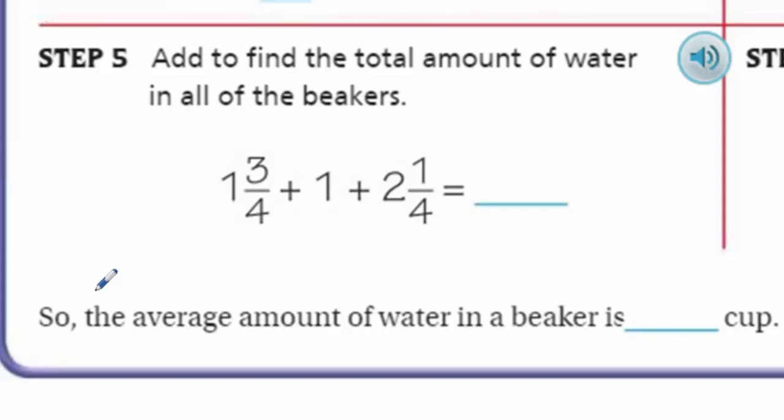Step five: add to find the total amount of water in all of the beakers. Maybe it's because I need to find the sum of all the amounts of water in the beakers. Before I can divide the total by the number of beakers, we need to add them all together first. One and three quarters plus one plus two and one quarter. These two numbers, they're compatible. These two numbers, when they come together, they make whole things happen. It makes a whole number. That's one, and there's another one. And there's two. And there's another one. So two plus one is three, plus four, five. Cinco.